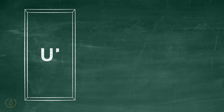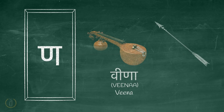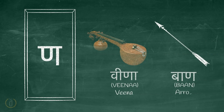Now let us learn some words having the letter Na. This is a simple word — Weena. Barn. Arrow.